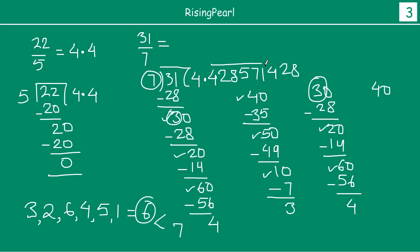So 4, 2, 8, 5, 7, 1 — it is going to repeat again. So we write this expansion as 4.428571, and from 4 this group of numbers are repeating.